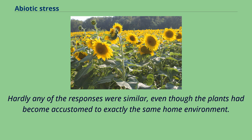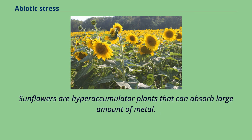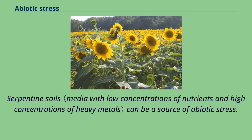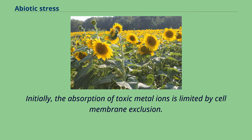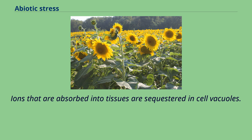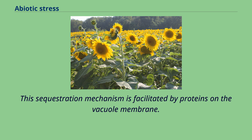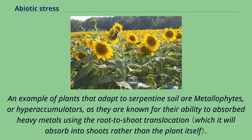Sunflowers are hyperaccumulator plants that can absorb large amounts of metal. Serpentine soils can be a source of abiotic stress — initially, the absorption of toxic metal ions is limited by cell membrane exclusion, and ions that are absorbed into tissues are sequestered in cell vacuoles, a process facilitated by proteins on the vacuole membrane. An example of plants that adapt to serpentine soil are metallophytes, or hyperaccumulators, known for their ability to absorb heavy metals using root-to-shoot translocation and for their ability to absorb toxic substances from heavy metals.